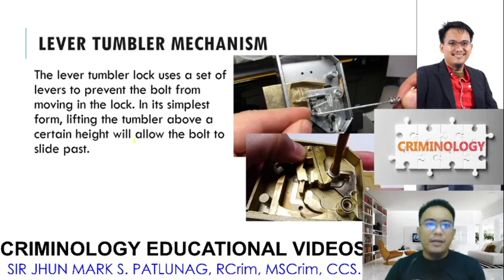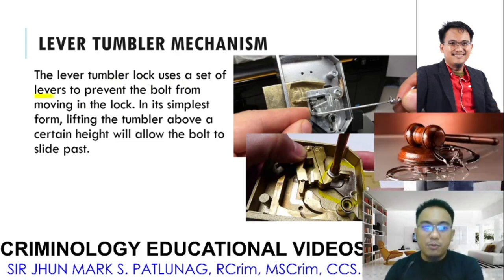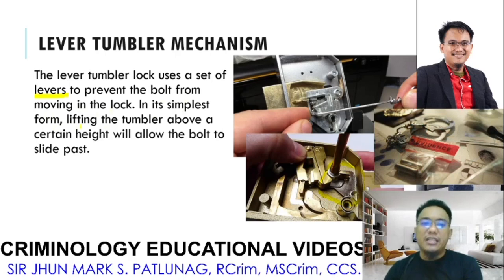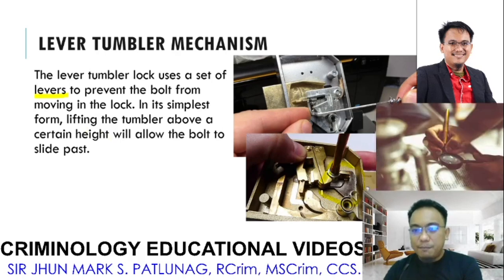Next is the lever tumbler mechanism, which is similar to the pin and wafer tumbler mechanisms, but it uses a lever. The lever tumbler lock uses a set of levers to prevent the bolt from moving. It is a simple form — lifting the tumbler above a certain height will allow the bolt to slide past. When the correct key is inserted, it automatically opens the lock.